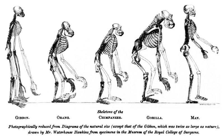At a more integrative level, bioinformatics helps analyze and catalogue the biological pathways and networks that are an important part of systems biology. In structural biology, it aids in the simulation and modeling of DNA, RNA, proteins as well as biomolecular interactions.